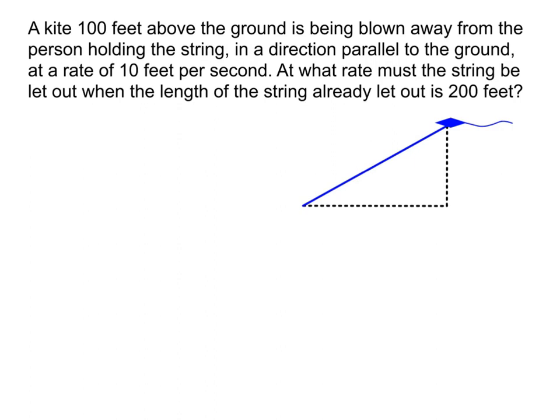So draw that little picture out so we can start seeing what's going on here, and I'm going to start labeling what I know. So I know the kite is 100 feet above the ground, and we know the kite is moving in a direction parallel to the ground.